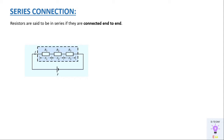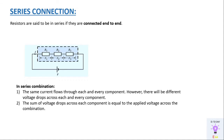To develop a relationship for series connection, we need to understand two important points. In a series combination, the same current will flow through each and every component — the current doesn't divide. However, the voltage across the individual resistances will be different: V1 will be the voltage drop across R1, V2 across R2, and V3 across R3. This is because we have different resistance values and there will be different drops across each component.